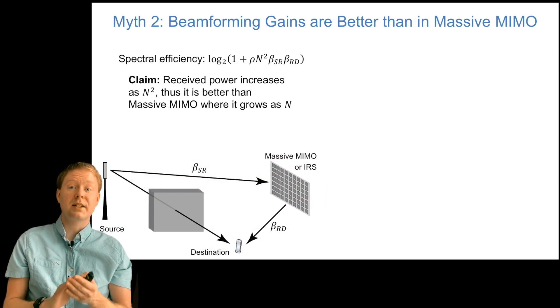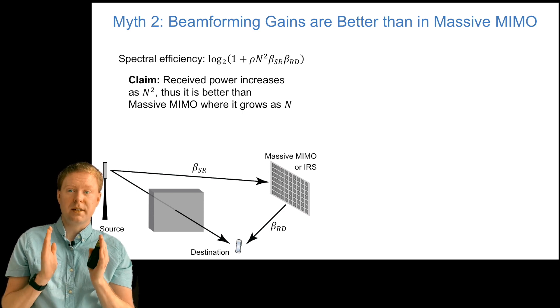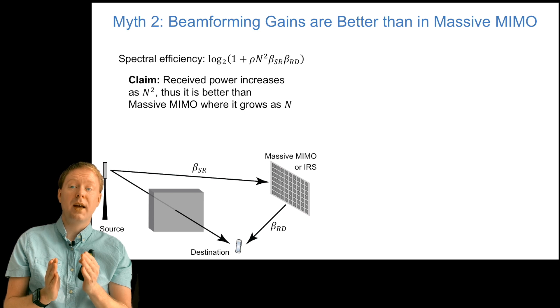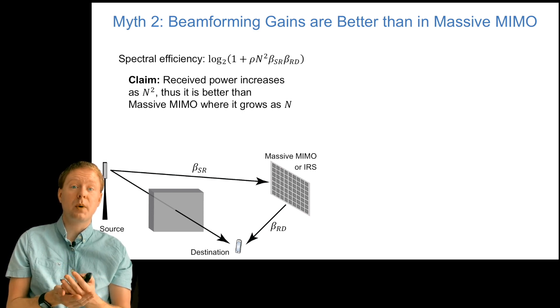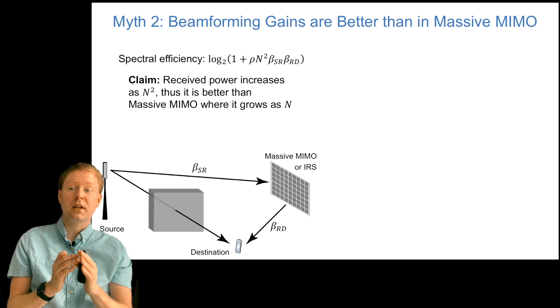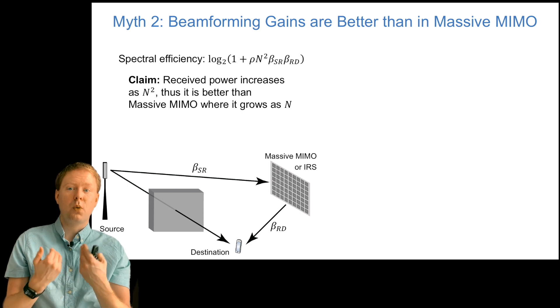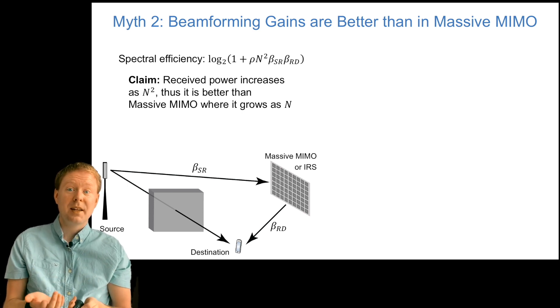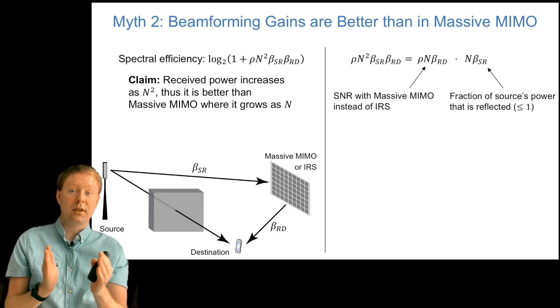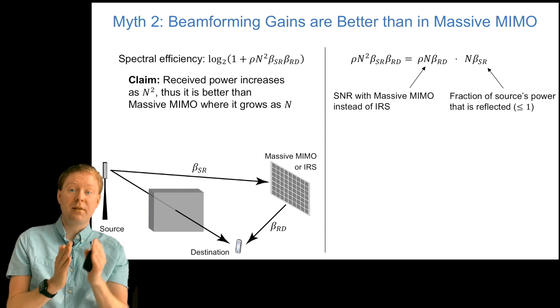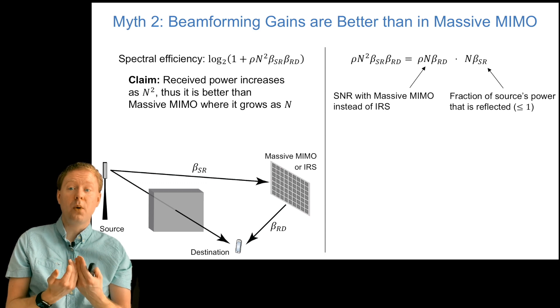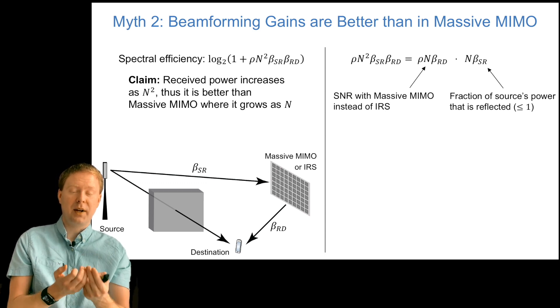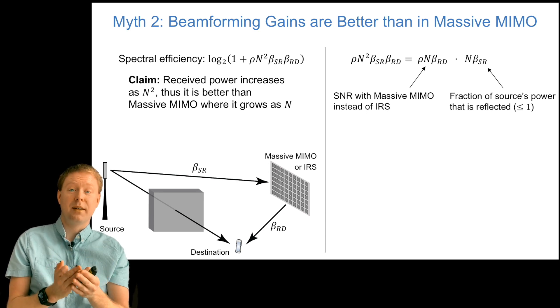The second myth is that the beamforming gains are better than in massive MIMO. If we look at this spectral efficiency expression, 1 + rho * n^2 * beta-sr * beta-rd that we had inside the logarithm, since we have n^2, this received power increases with the square of the number of elements. Compare that with the massive MIMO system where we transmit from the same location as the IRS. We cut out the source entirely and just transmit to the same destination. Then the power would only grow with n. And n^2 is better than n, right? Well, the problem is that if you take this SNR expression that you get with the IRS, we can factor it up into a first part, rho * n * beta-rd. This is the SNR that the massive MIMO system would get. Then we have a second factor, n times beta-sr. That is the fraction of the power that comes from the source that actually reaches the IRS. We can never reach it with more than the full power factor one here. That means that we will always have worse SNR when we are working with an IRS.